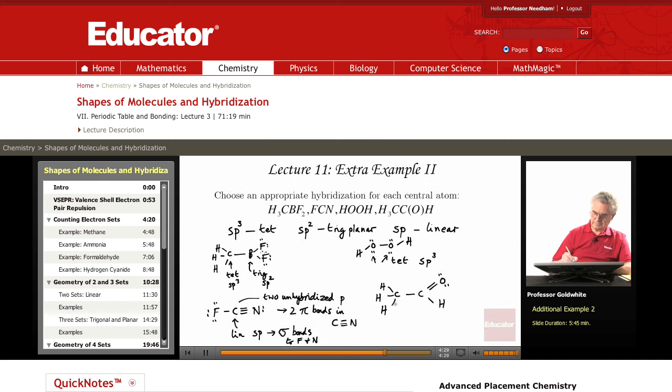Acetaldehyde. The carbon of the CH3 or methyl group is SP3 hybridized. But the formaldehyde, the aldehyde group, the CHO group, which is trigonal planar, is SP2 hybridized.